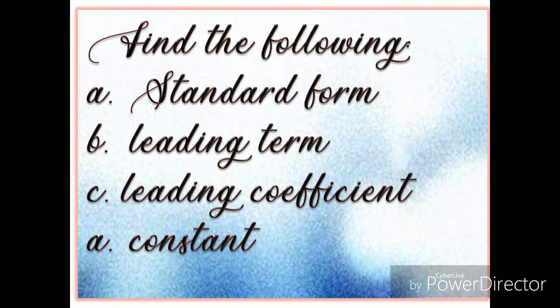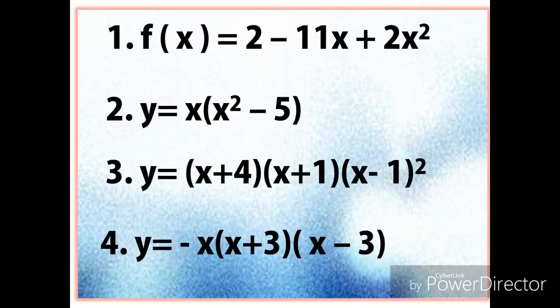In this lesson we're going to find: A) the standard form of the polynomial function, B) the leading term, C) the leading coefficient, and D) the constant of the polynomials. We have four different examples — the first one is not in standard form, and examples two, three, and four are in factored form.